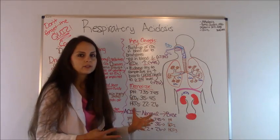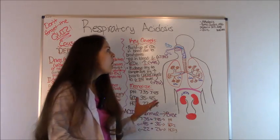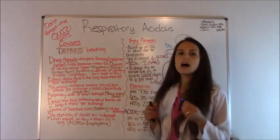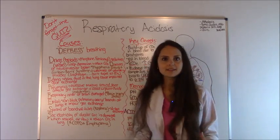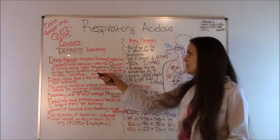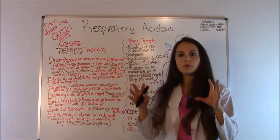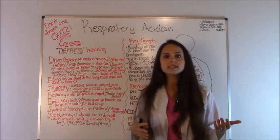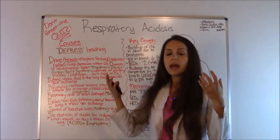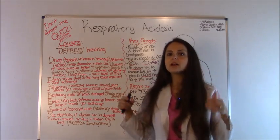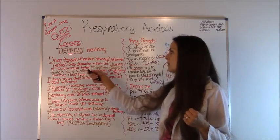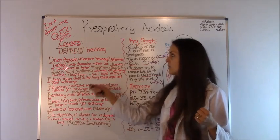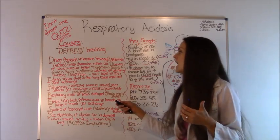Just try to remember that because that's going to help us whenever we solve our blood gases using the tic-tac-toe method. Let's go over the causes of respiratory acidosis. Remember this mnemonic, the word DEPRESSED, depressed breathing, because that is one of the big reasons why your body is becoming acidotic, why you're having that buildup of CO2. Remember the word DEPRESSED and each word will correlate with what the cause is.